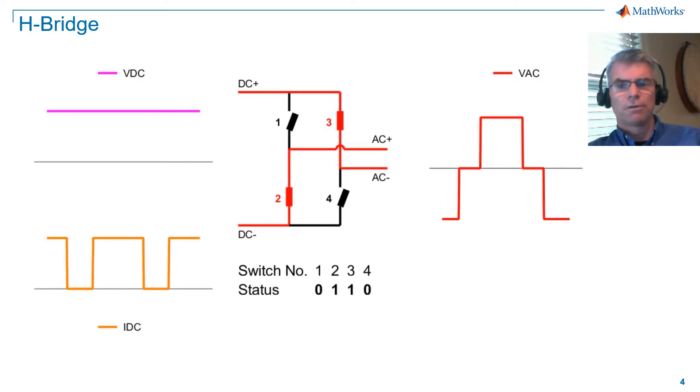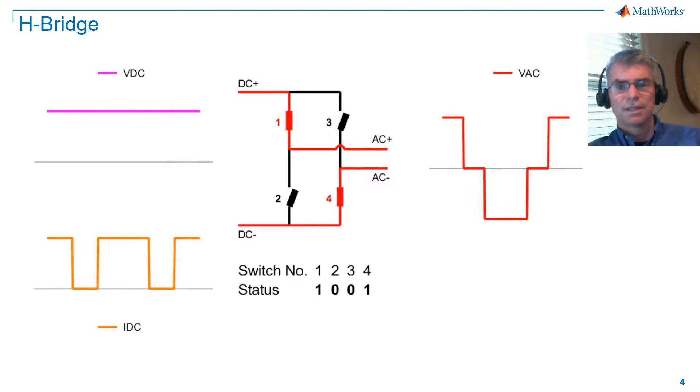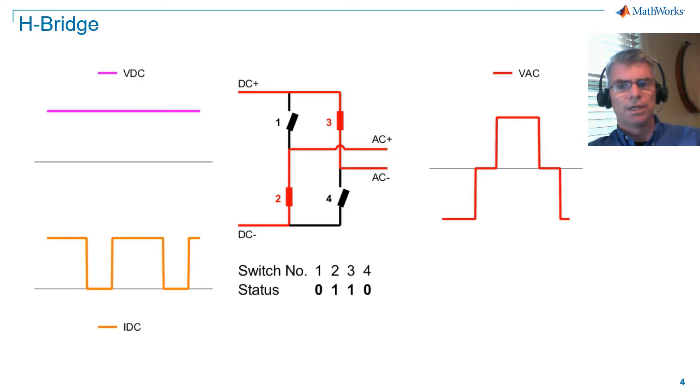On the AC waveform, note that the null period lasts for 60 degrees, and the positive or negative periods last for 120 degrees, relative to the period of the AC waveform. Also note that DC current drops to 0 amps during a null sequence.